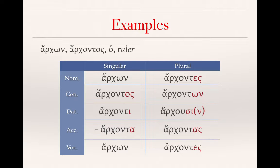So os in the genitive singular, i in the dative singular, a in the accusative singular, es in the plural nominative, on in the plural genitive, and os in the plural accusative. The dative plural is just our distinctive, weird one. Fortunately, that sigma and the iota should be distinctive enough, and if you're able to see other clues in the sentence, that will help you as well.